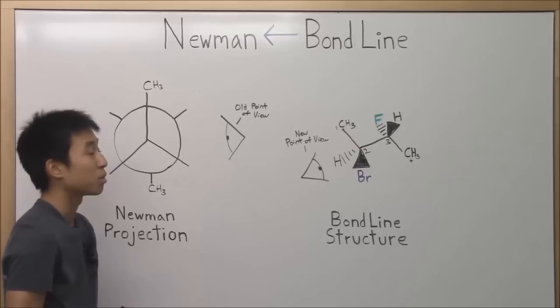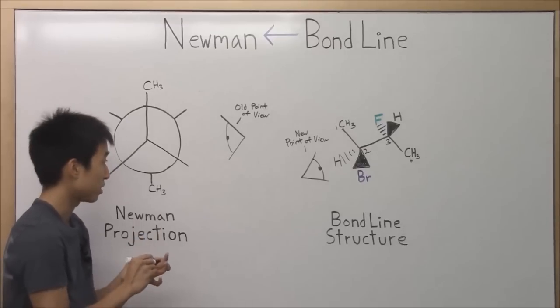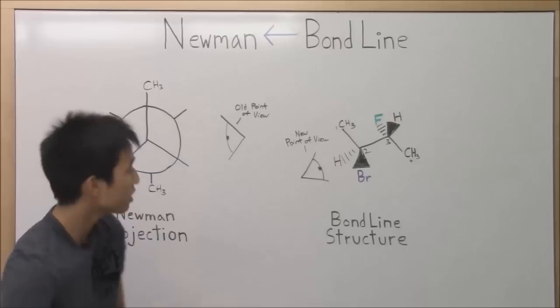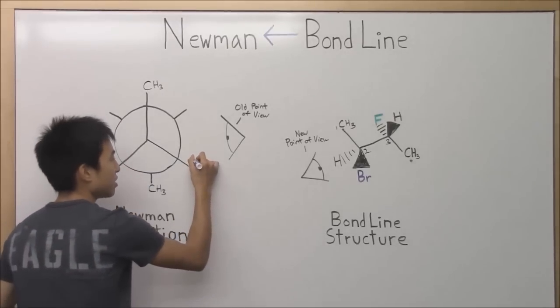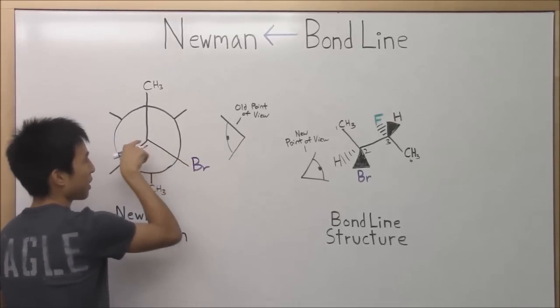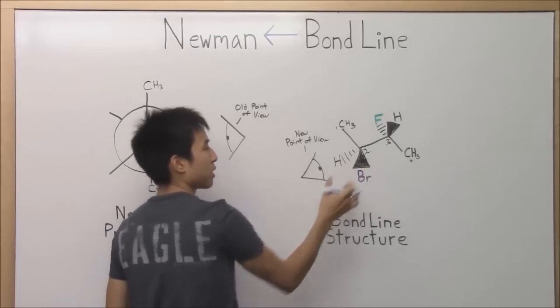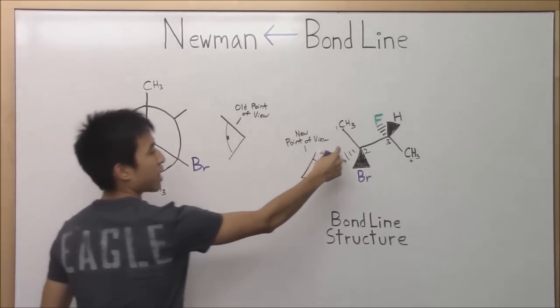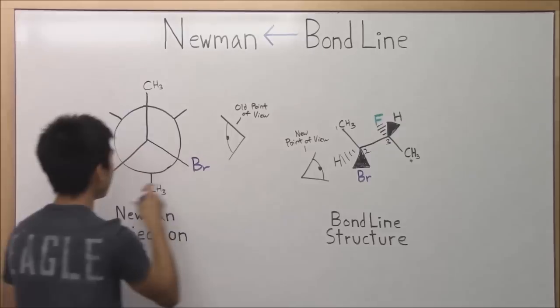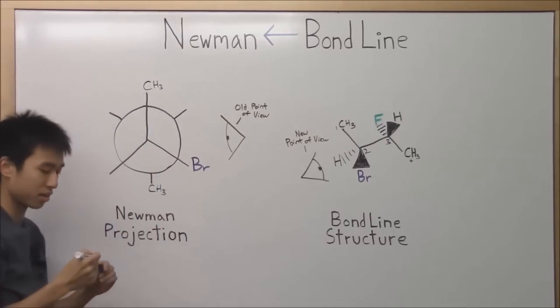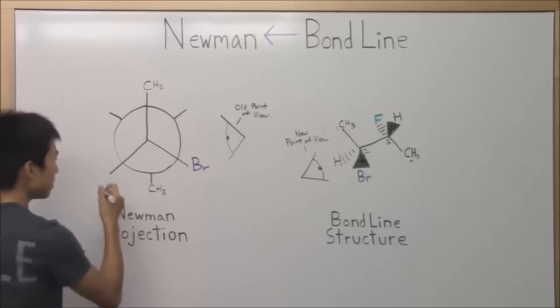So bromine would actually be the guy who is over here. And the reason behind that is that this bond is the one that's actually coming out towards our eye. So this is going to be the wedge bond. And then hydrogen's dashed, so it's going into the board, so it must be going away from our eye. And that's how you basically do it.